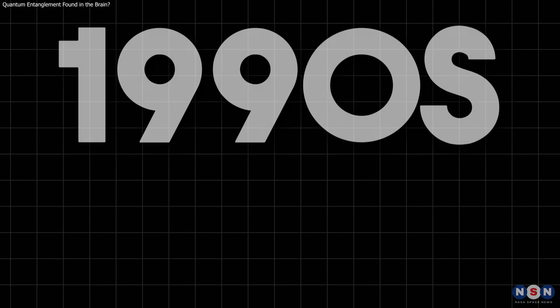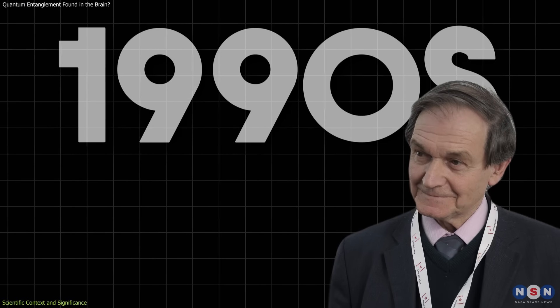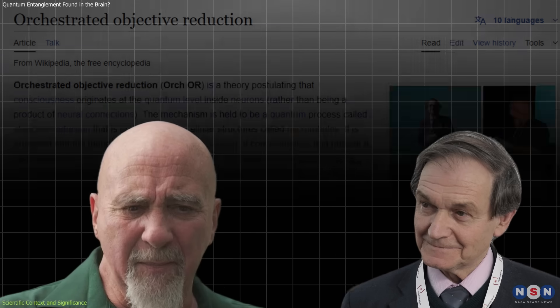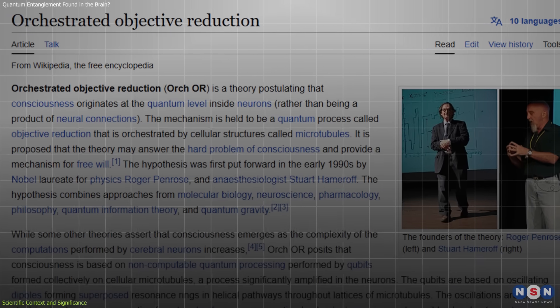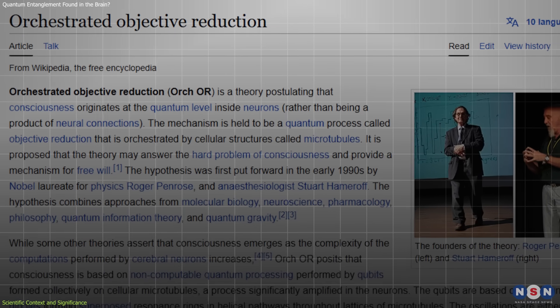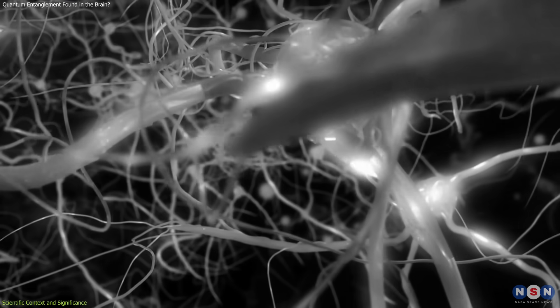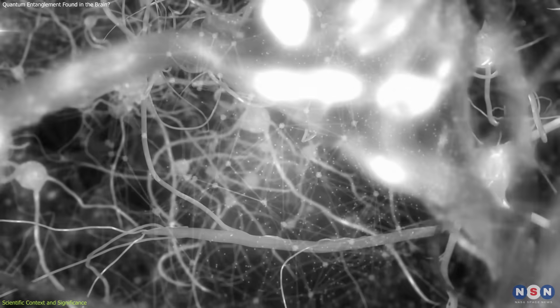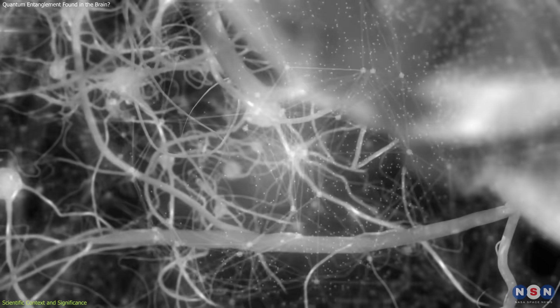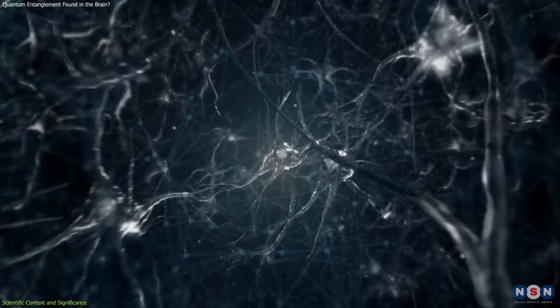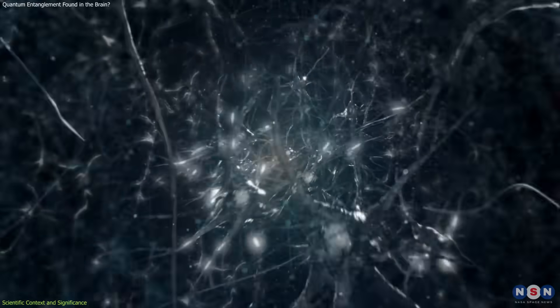In the 1990s, physicist Roger Penrose and anesthesiologist Stuart Hameroff proposed a model called orchestrated objective reduction, or Orch-OR. They believed that microtubules inside neurons could support quantum computations related to consciousness. That theory was widely criticized, mostly due to a lack of biological feasibility and experimental support.